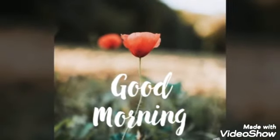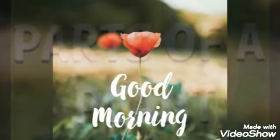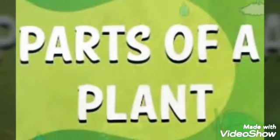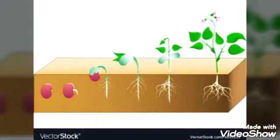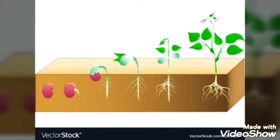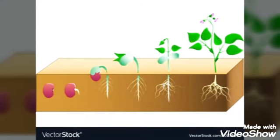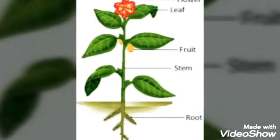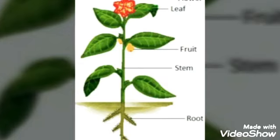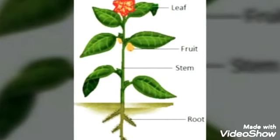Good morning class, today we will learn parts of a plant. So let's begin. When a seed is sown in the soil, it turns into a plant. The plant grows up and forms different parts — each part has different functions.